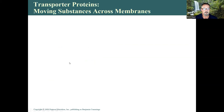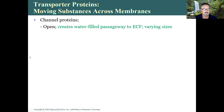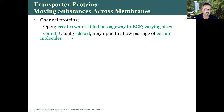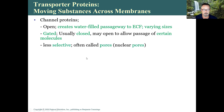Transport proteins move substances across membranes. An open channel protein creates a water-filled passageway to the extracellular fluid and can vary in size — larger ones allow larger molecules through, smaller ones only allow the smallest molecules. A gated channel protein can open or close; it's usually closed but opens to allow passage of specific molecules like sodium or potassium. Less selective channels are often called pores, such as nuclear pores in the nuclear envelope that allow messenger RNA to exit.